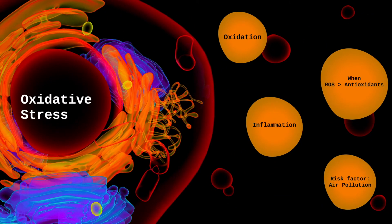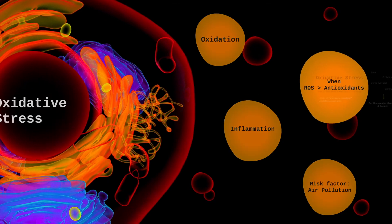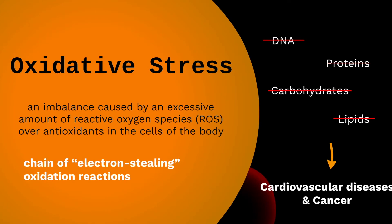However, when we have too much ROS in our body and not enough antioxidants to get rid of them, oxidative stress happens. Oxidative stress is defined as an imbalance caused by an excessive amount of reactive oxygen species over antioxidants in the cells of the body.